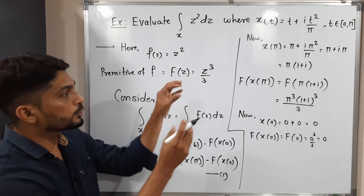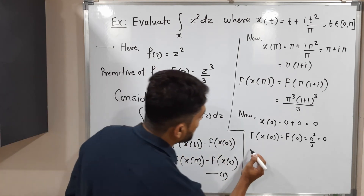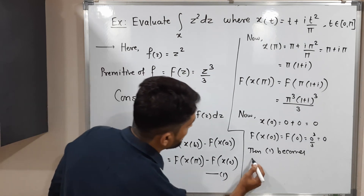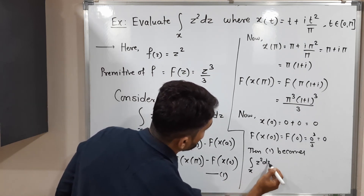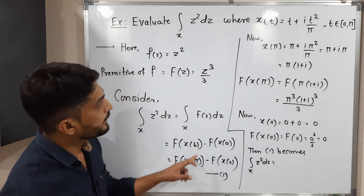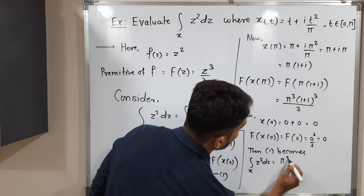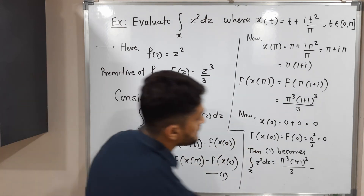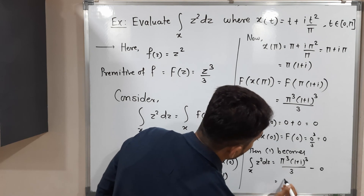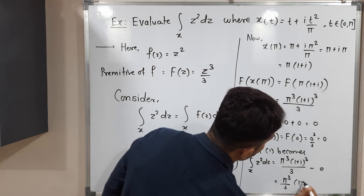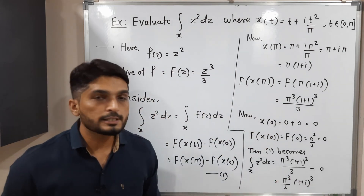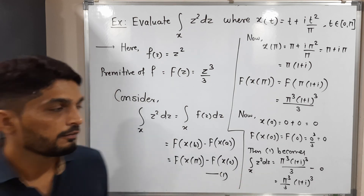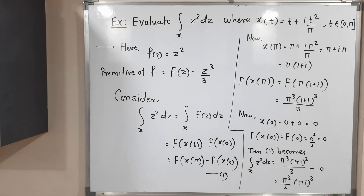Now we have both values, so let us substitute into equation number one. The integration over X of Z square dZ equals F of X of pi minus F of X of zero, which is pi cubed times (1 + i) cubed divided by 3, minus zero. So the final answer is pi cubed over 3 times (1 + i) cubed. If you want, you can expand the bracket using the (a + b) cubed formula, or keep it as is. That is the final answer. Make a screenshot of it. Thank you, bye bye.